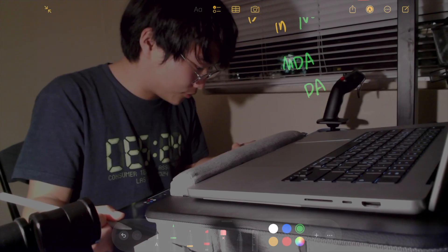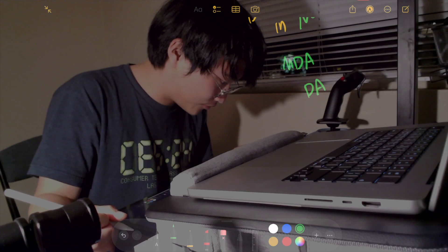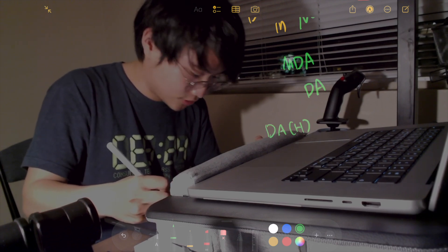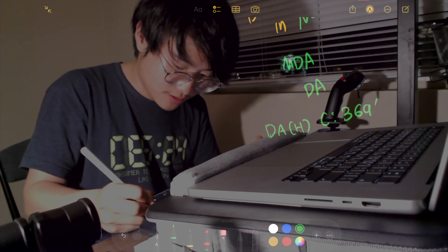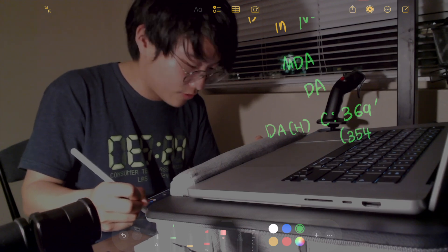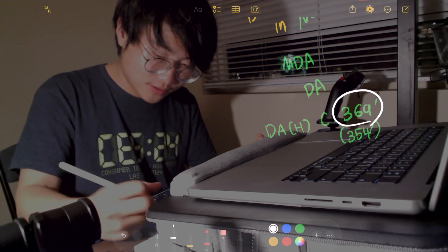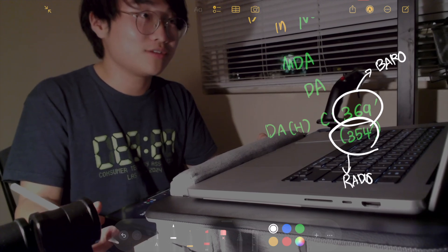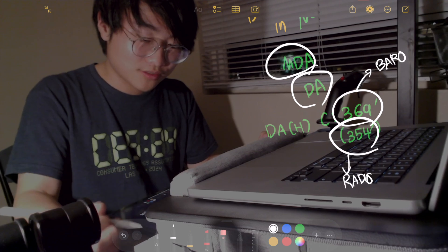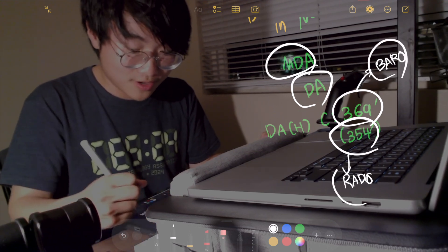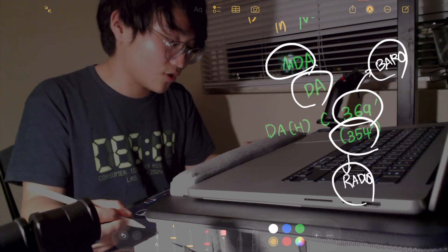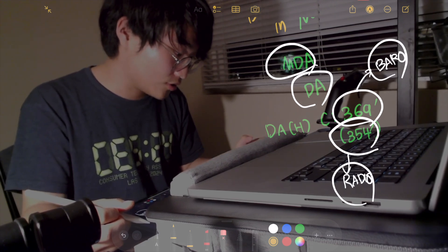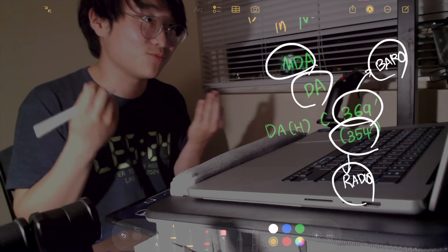So on the charts, you're going to be able to find a section that sort of looks like this. It's going to say DAH C — 369 — and then you're going to find this bracket that says 34, 354, for example. So this is your barrel value, and this is your radio value to simplify it. But how does that relate to MDA and DH?